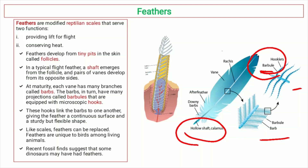On the barbules, there are microscopic hook-like structures known as hooks or hooklets. These hooks play an important role in linking the barbs to one another and maintaining the feather structure and flexible shape. Feathers are unique to birds among living animals, whereas recent fossil evidence indicates that some dinosaurs might have also had feathers.